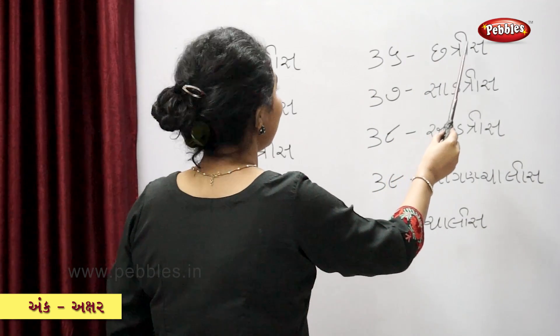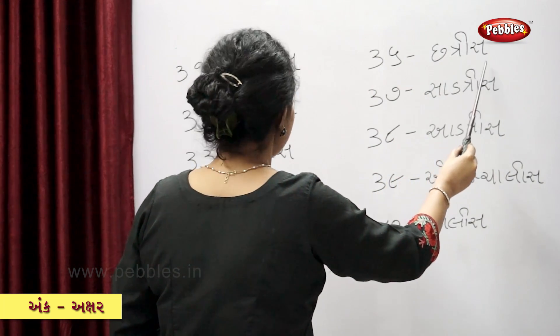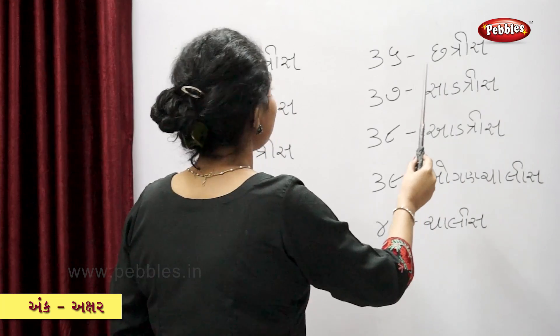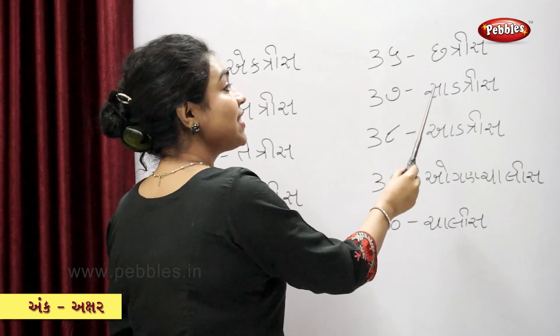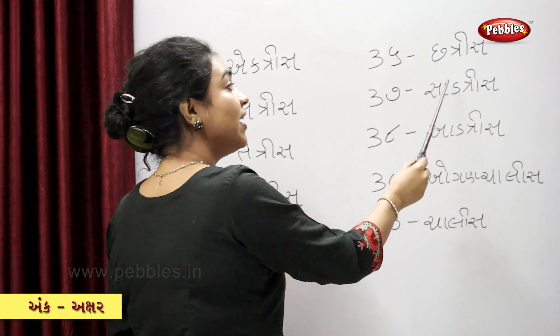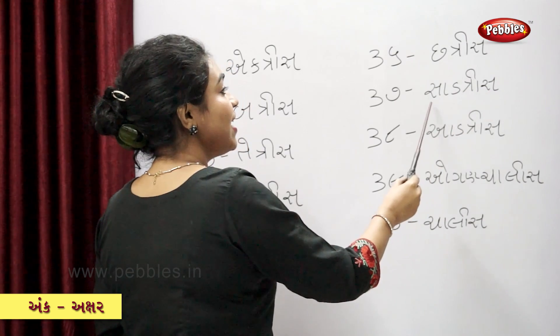चात्रीस — thirty-eight. साडत्रीस — thirty-nine.